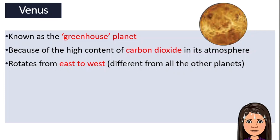This planet rotates from east to west, which is different from all the other planets. For example, Earth and Mars all rotate from west to east. Venus rotates the other way around — it is a pretty confused planet. And because Venus rotates from east to west, if we were right here on Venus, we would notice that the sun actually rises from the west and sets in the east.